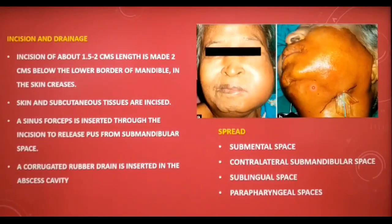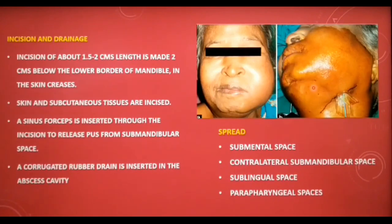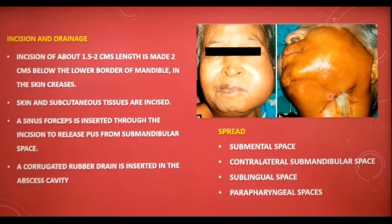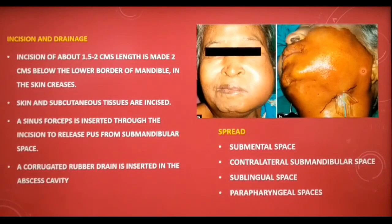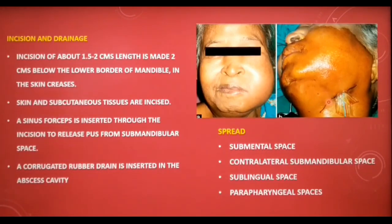Surgical drainage is performed by placing an incision of about 1.5 to 2 cm length, 2 cm below the lower border of the mandible within a skin crease. The skin and subcutaneous tissues are incised, a sinus forceps is inserted through the incision in a superior and posterior direction on the lingual side of the mandible below the mylohyoid. This releases pus from the submandibular space. A corrugated rubber drain is then inserted into the abscess cavity and secured with a suture.